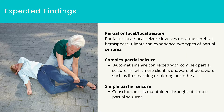Partial or focal-local seizure involves only one cerebral hemisphere. Clients can experience two types: complex partial seizure — automatisms are connected with complex partial seizures, in which the client is unaware of behaviors such as lip-smacking or picking at clothing. The seizure can cause loss of consciousness or blackout for several minutes, and amnesia can occur immediately prior to and after the seizure. Simple partial seizure: consciousness is maintained throughout. Seizure activity can consist of unusual sensations, a sense of déjà vu, autonomic abnormalities such as changes in heart rate and abnormal flushing, interlateral abnormal extremity movement, pain, or offensive smell.